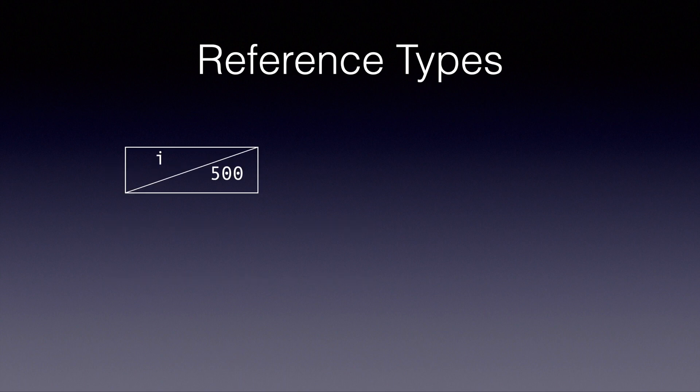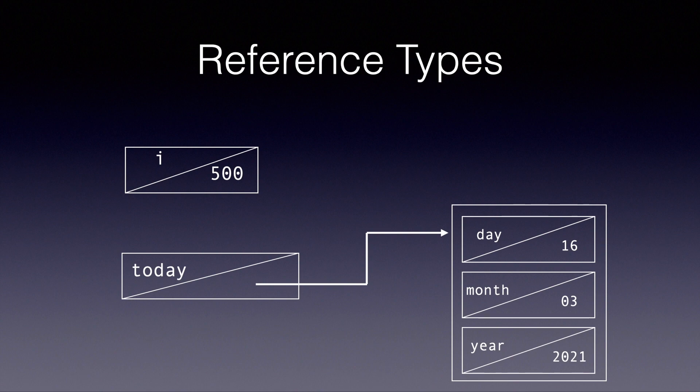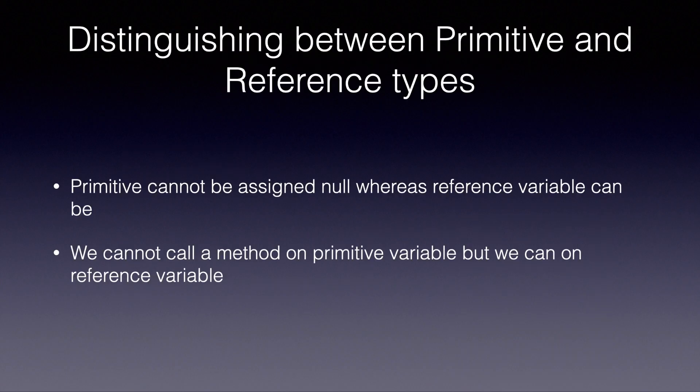The next slide shows the same thing as a visual representation. The primitive variable i actually stores the value 500 directly. But the reference variable today does not store the date, month, and year — it only stores the address that tells you how to reach the object where the date, month, and year are stored.